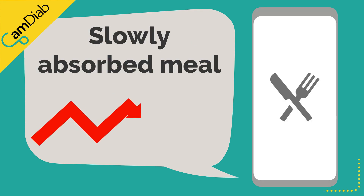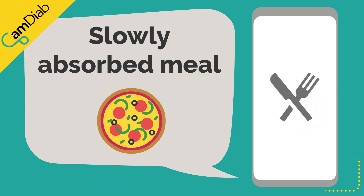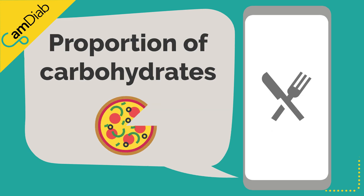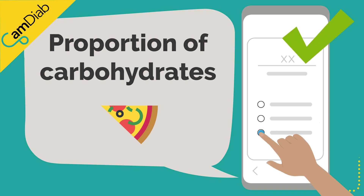The slowly absorbed meal gives people an option to manage foods that have a prolonged impact on glucose levels and are often higher in fat and protein. The initial rise in glucose levels after eating, for example pizza, will still need to be dealt with by giving a pre-meal bolus. However, by selecting the slowly absorbed meal option, you are notifying the algorithm that it might need to be more aggressive to deal with the delayed effect of the meal over a longer period of time. You will need to decide what proportion of the carbohydrates in the meal you will enter into the bolus calculator and deliver as a pre-meal dose of insulin, and what proportion you enter into slowly absorbed meal.